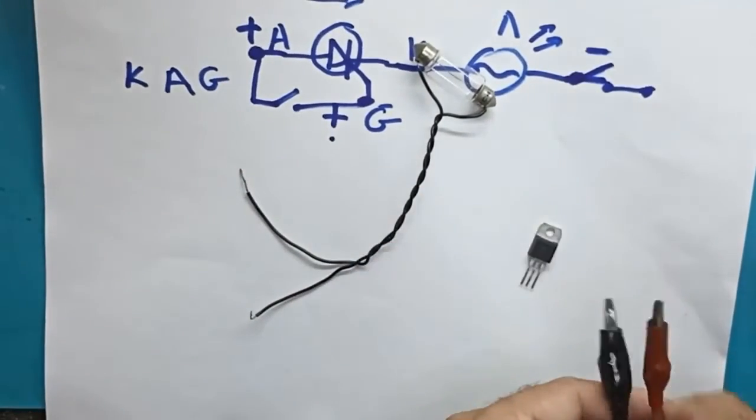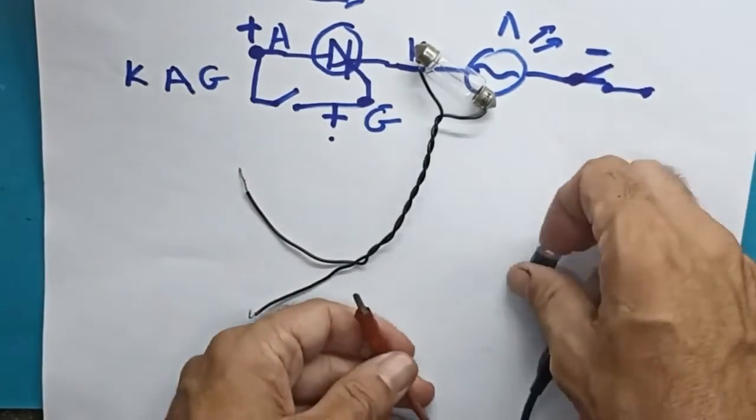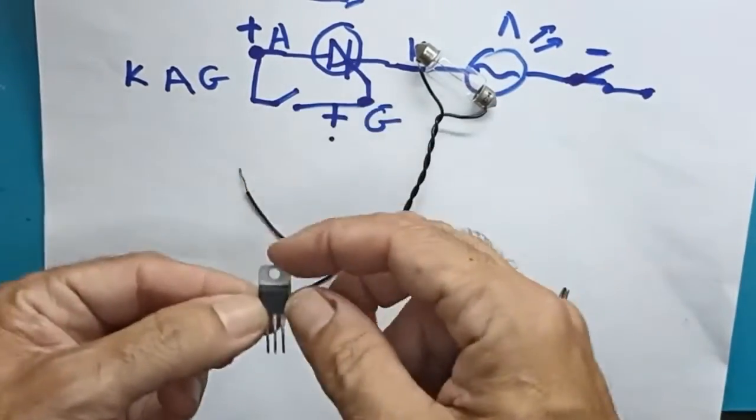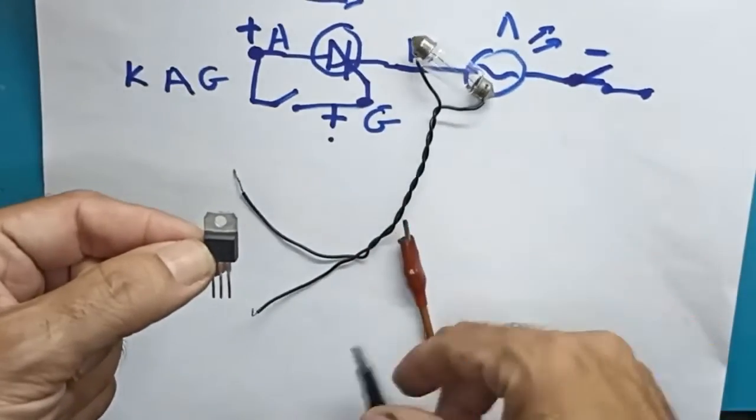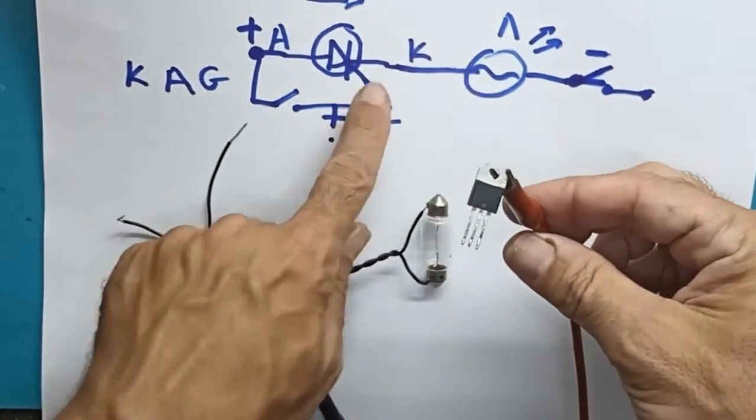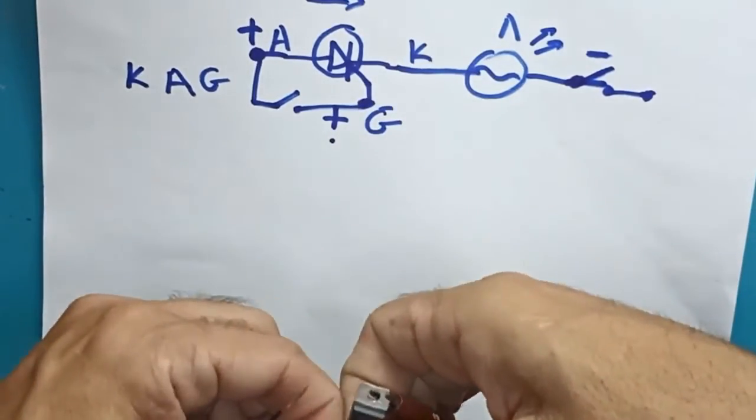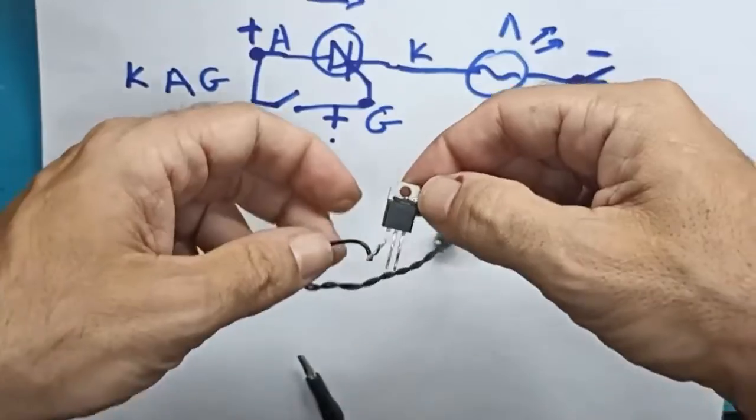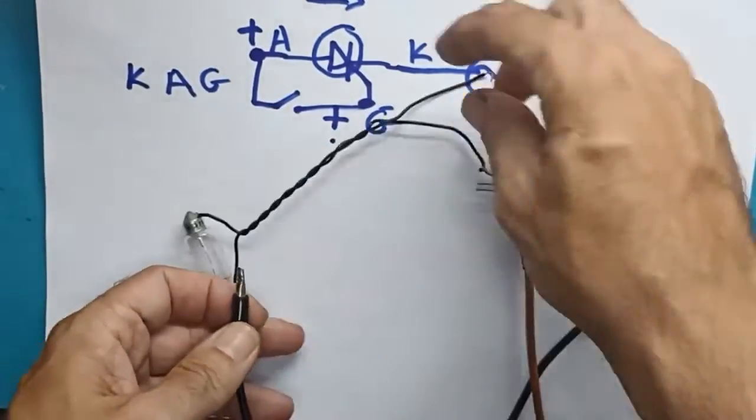I will apply the positive to the anode. The anode in this specific thyristor is the middle little foot. If we see it over here, it's the middle little foot, and it's also the body's top. In this specific thyristor, I put the plus on top of its body. Here and on the cathode, I will put one wire from the bulb.